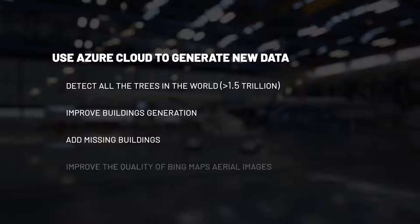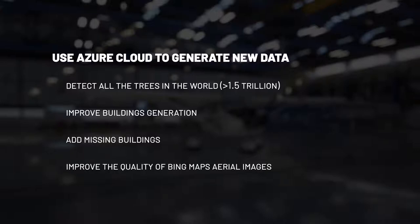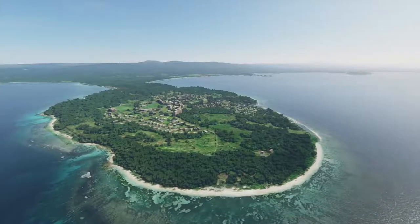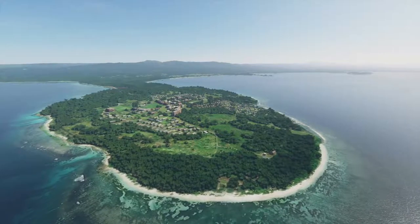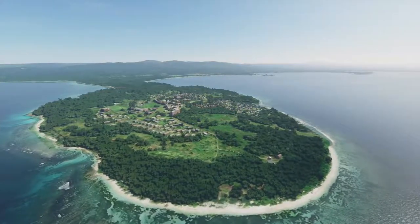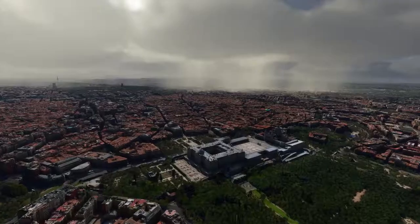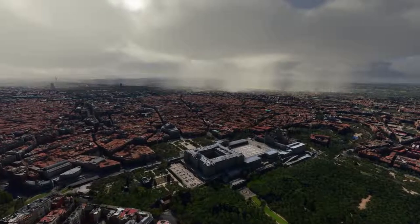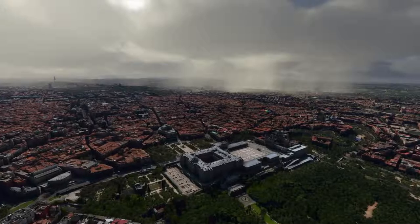It also allows us to improve the quality of Bing Maps aerial imagery — sometimes some areas can be captured with clouds on top of them, and we can detect those and replace them with texture synthesis that happens at runtime. To put some images on what I'm talking about: this is an island near New Guinea. If we only had Bing Maps data there, the island would be kind of flat and you wouldn't have the trees and the buildings. But thanks to the detection that we could run on Azure, we know where to place trees, we know where to place buildings, we know what the buildings should look like, and this allows us to create a much more believable and accurate representation of the earth.